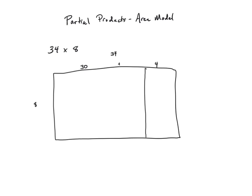Now we've split our 34 by 8 array into two partial products. This big rectangle right here is an 8 by 30 rectangle, and that means it has an area of 240 square units. Our other partial product, this rectangle over here, is an 8 by 4 rectangle, which has an area of 32 square units.